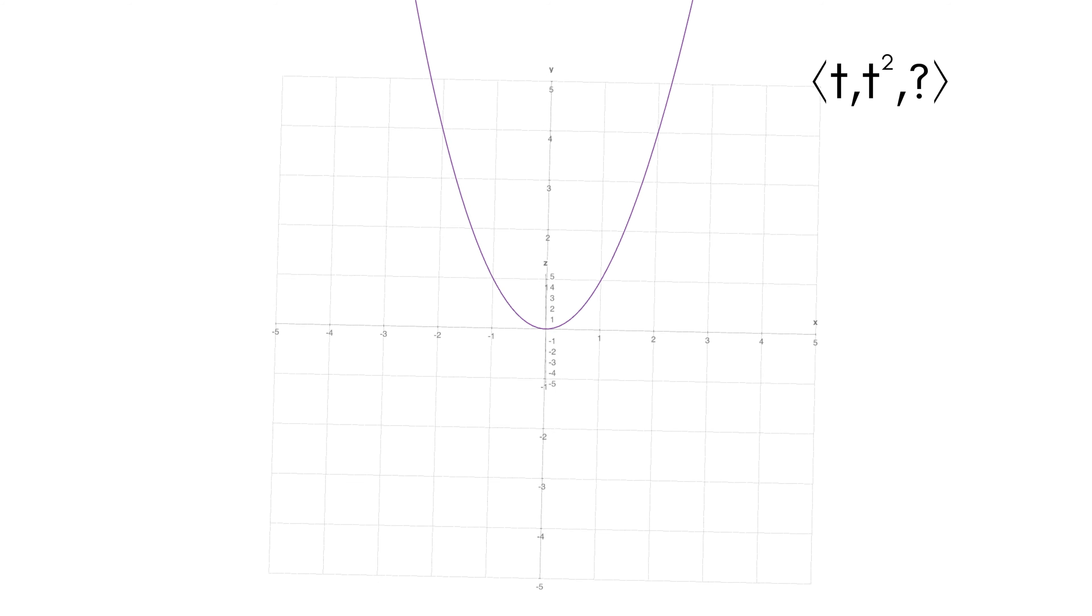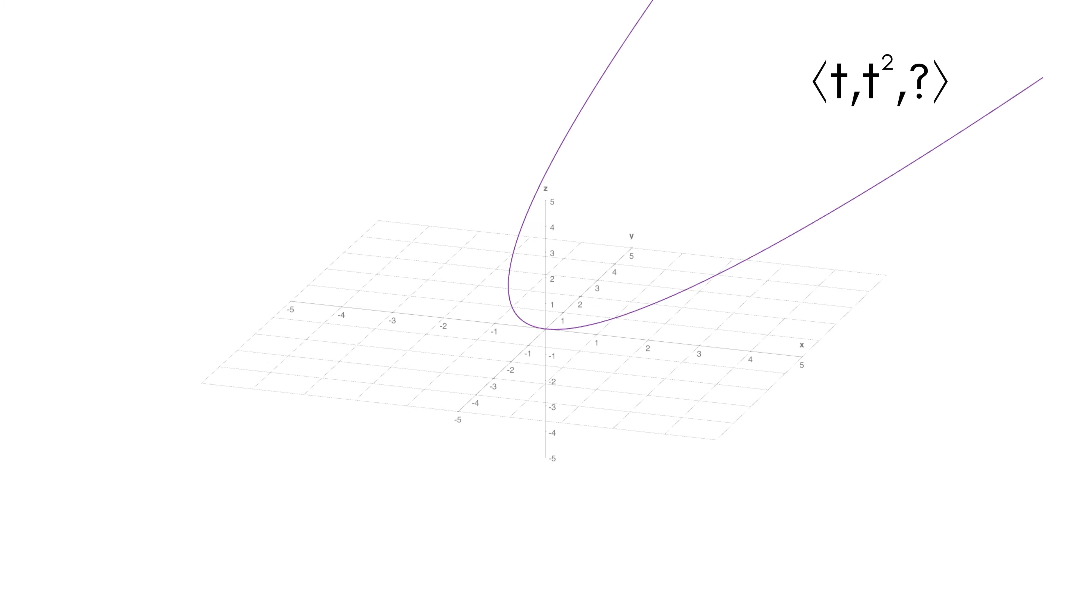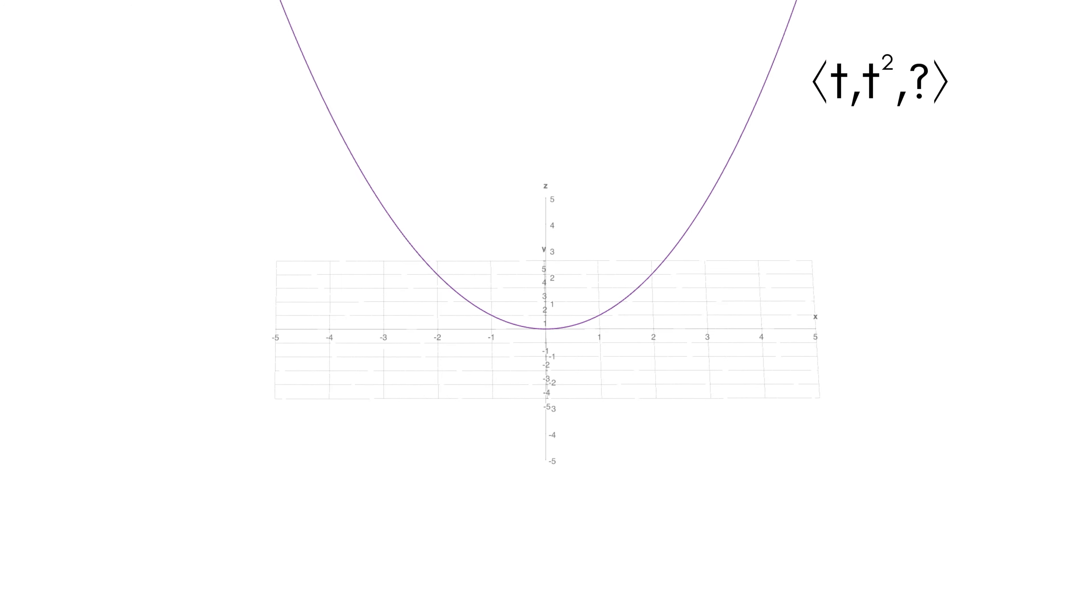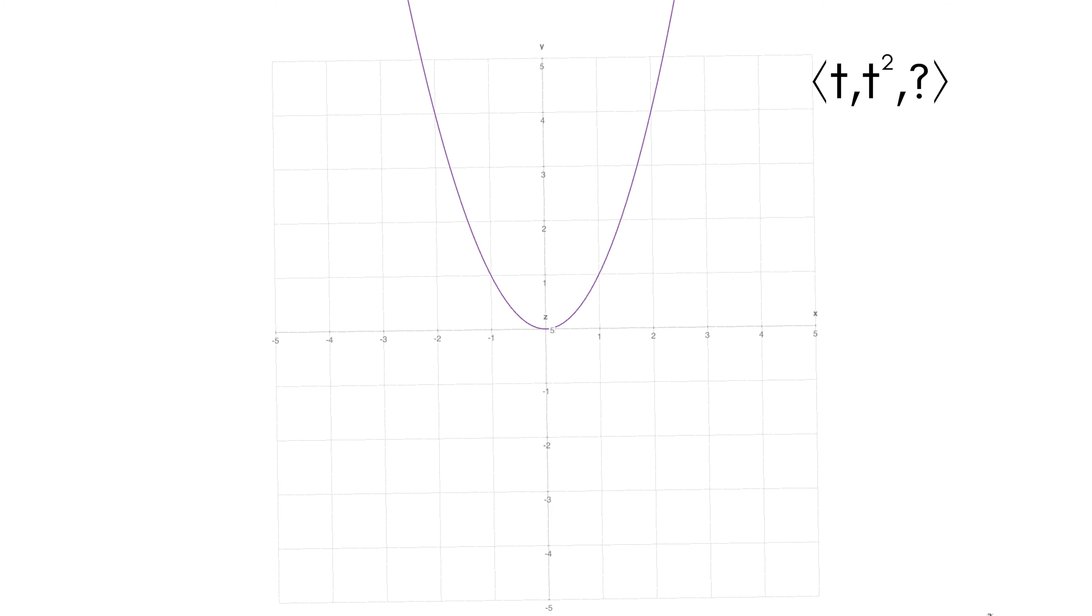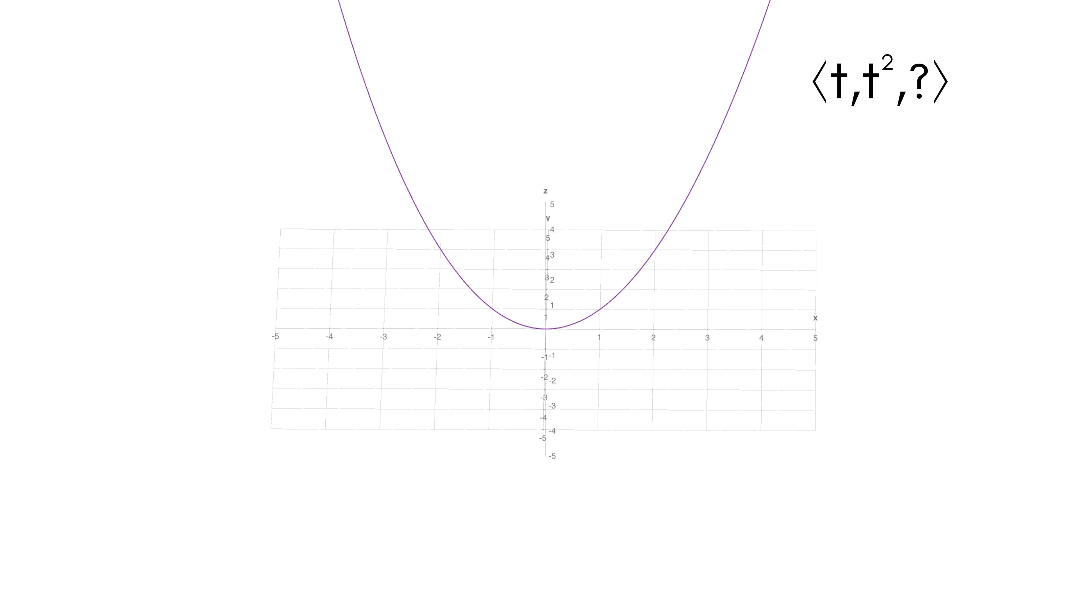But we can really do anything we want. And so I'm just going to pick maybe another simple example and just show you how this can really change depending on what we do. So here I've put t in the x component and t squared in the y component. And so if I ignore z, this actually looks just like a parabola, like you'd expect if we had x and x squared. But here we have t and t squared.